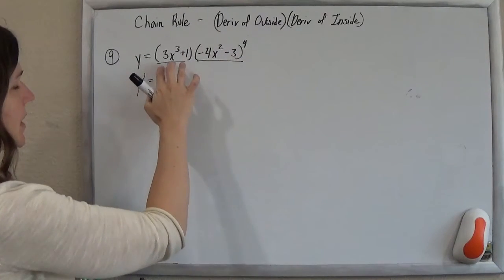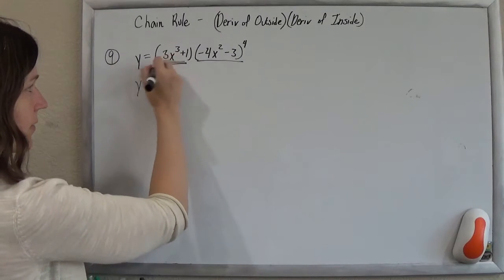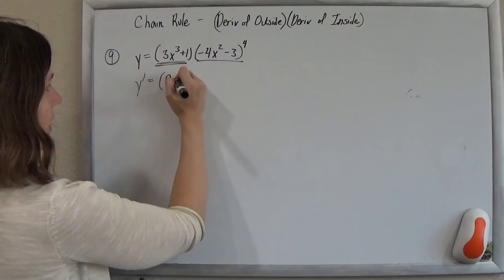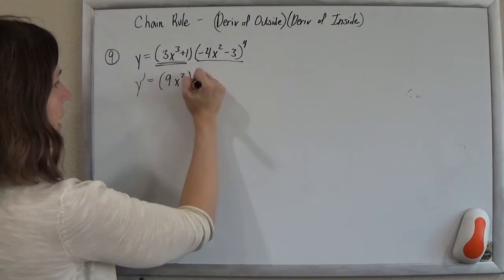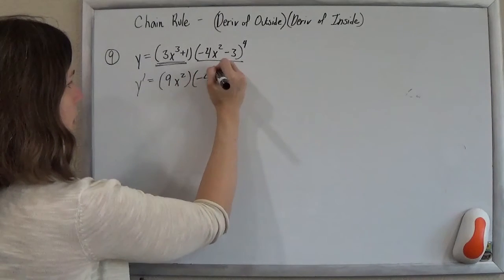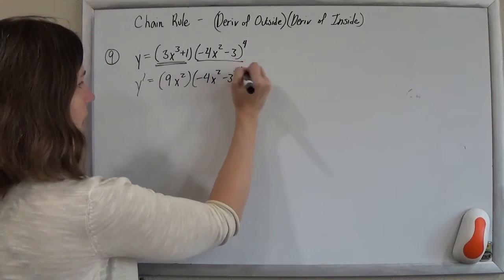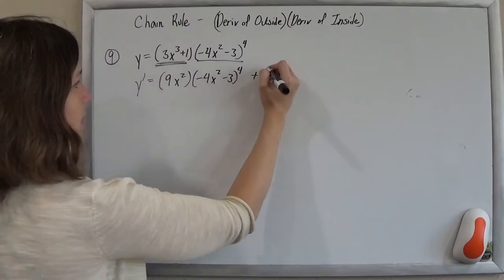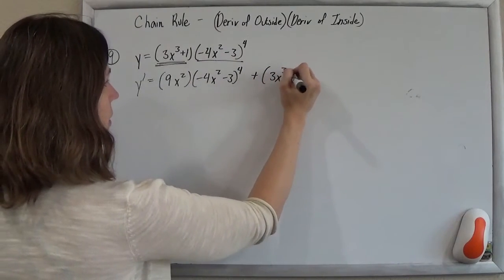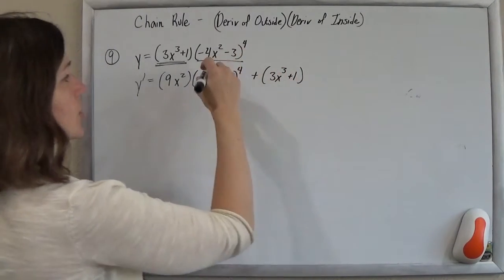So remember product rule, we said we took the derivative of this first guy first. So that's 9x squared. And we left the second part b. And then you add the reverse. So leave the first guy alone.